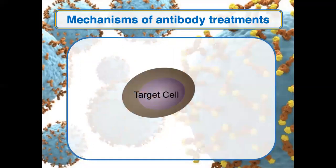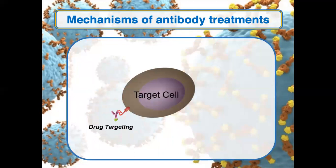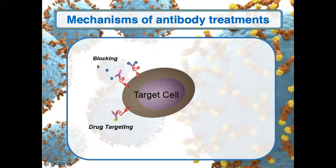For example, let's say we have a target cell — imagine it's a cancer cell or a viral entity. One mechanism you can use with antibodies is to attach a drug to an antibody, allowing the drug to specifically target an antigen. You can also use antibodies to block a receptor on a target cell, blocking a growth factor or chemical stimulus, causing the target cell to die or produce some other desired effect.